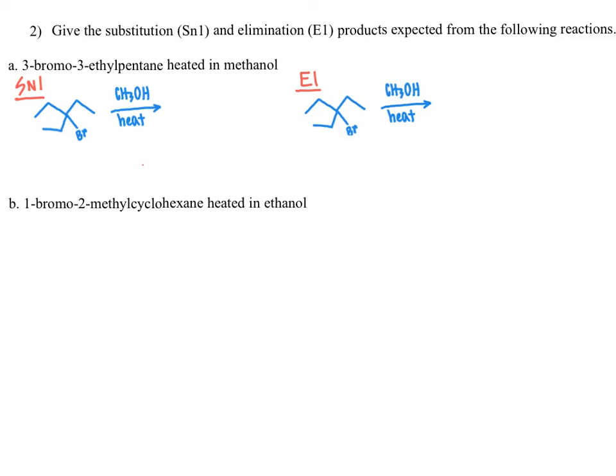In this video, I will be walking you through the solution to question number two from the chapter seven problem solving set, where we are asked to give the substitution SN1 and elimination E1 products expected from the following reactions. The first part has us reacting 3-bromo-3-ethylpentane heated in methanol.